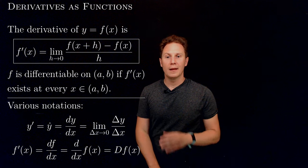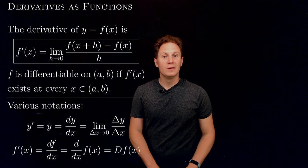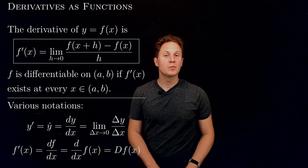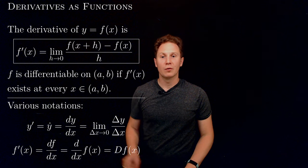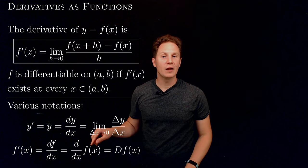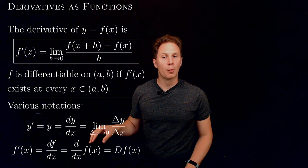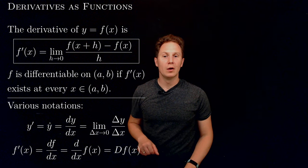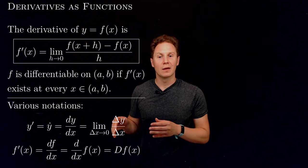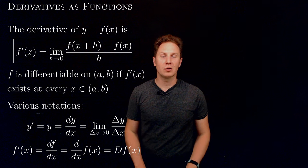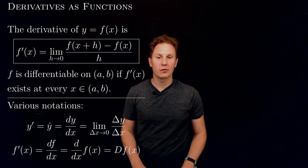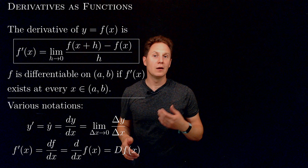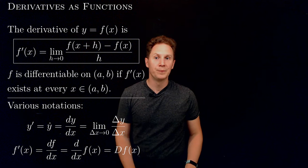If you want to denote differentiation with respect to x, you can write d/dx and then apply it to a function f(x), or simply write capital D applied to the function f(x). The last notation is generally attributed to Euler.